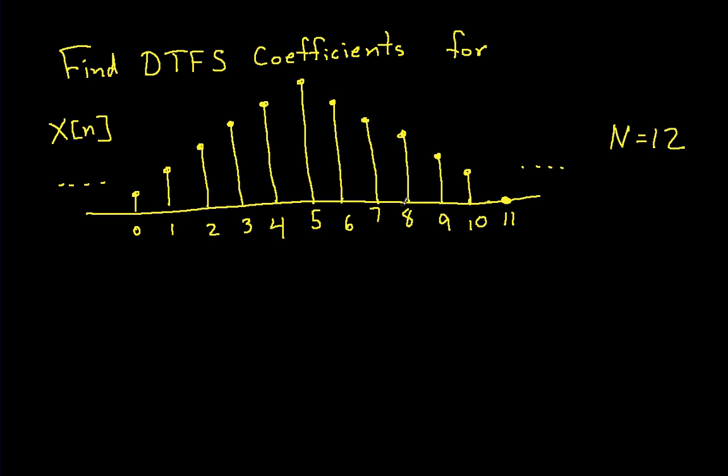In the process of finding the discrete time Fourier series coefficients, we'll actually use properties or a property of the Fourier series coefficients and results that we've already derived in previous videos, so we're not going to work any summations.